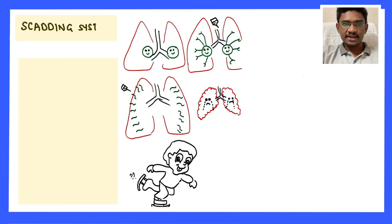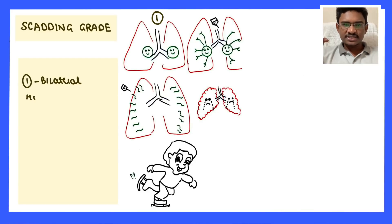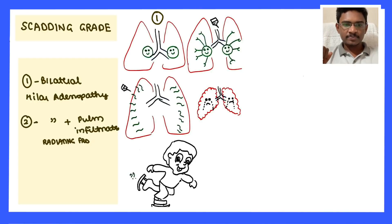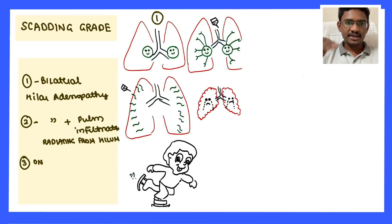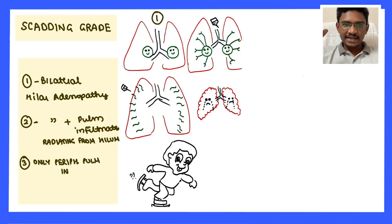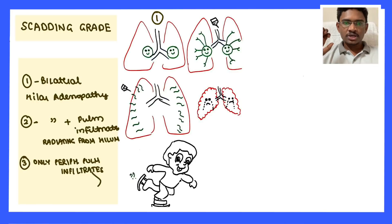In sarcoidosis, the Scadding classification system is used to classify severity. Stage one: patient has only bilateral hilar lymphadenopathy. Stage two: hilar lymph nodes are enlarged along with infiltrates radiating from the central hilum. Stage three: infiltrates have reached the periphery. Stage four: the lung is replaced by fibrous tissue — fibrosis.